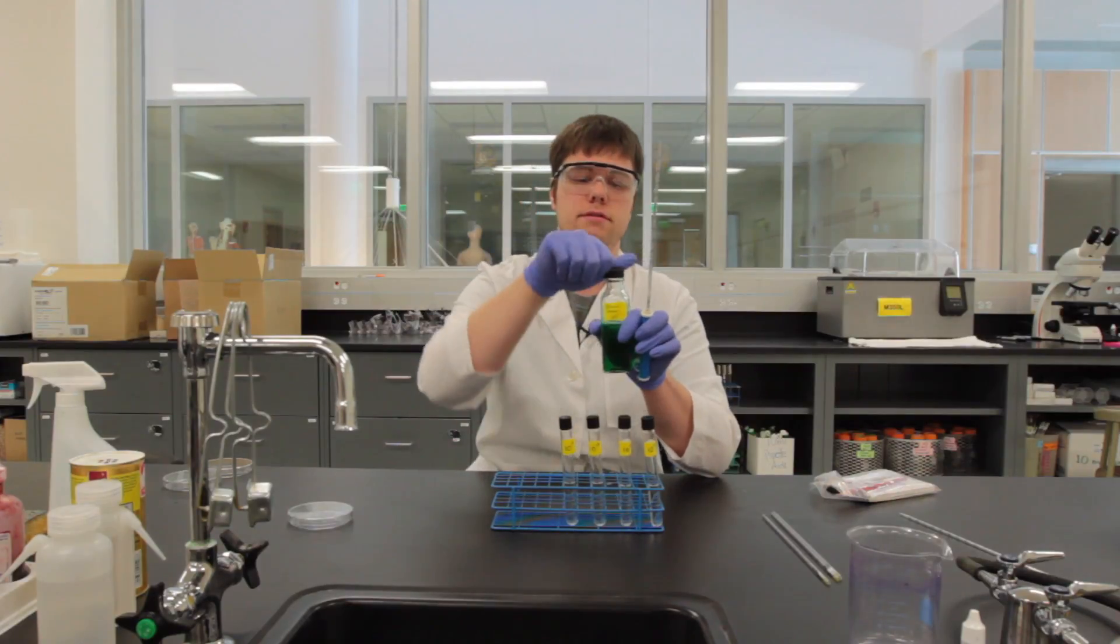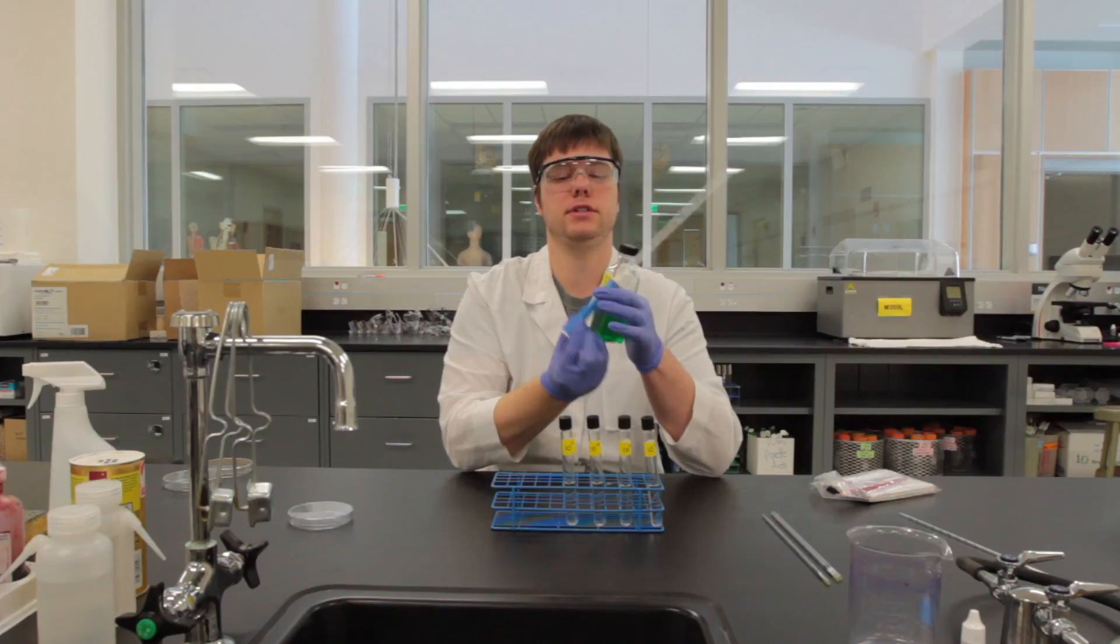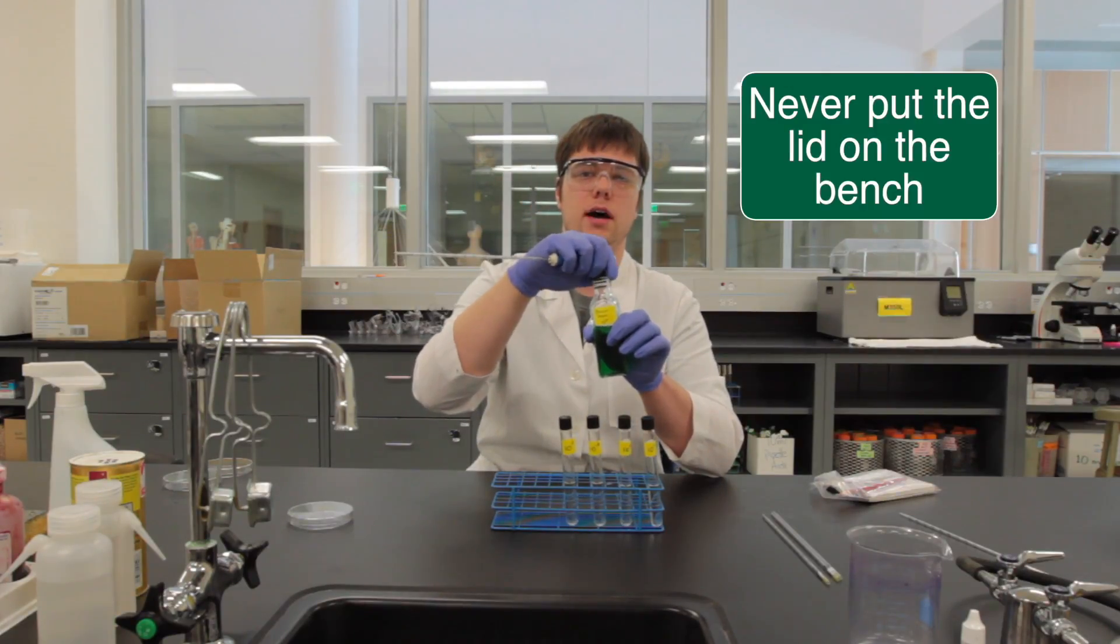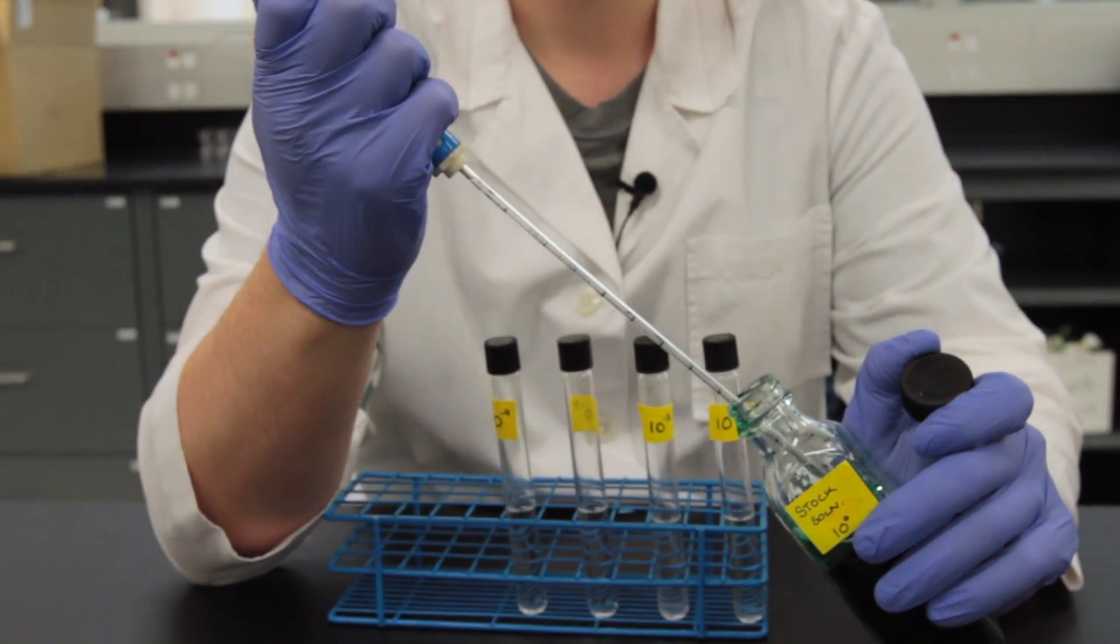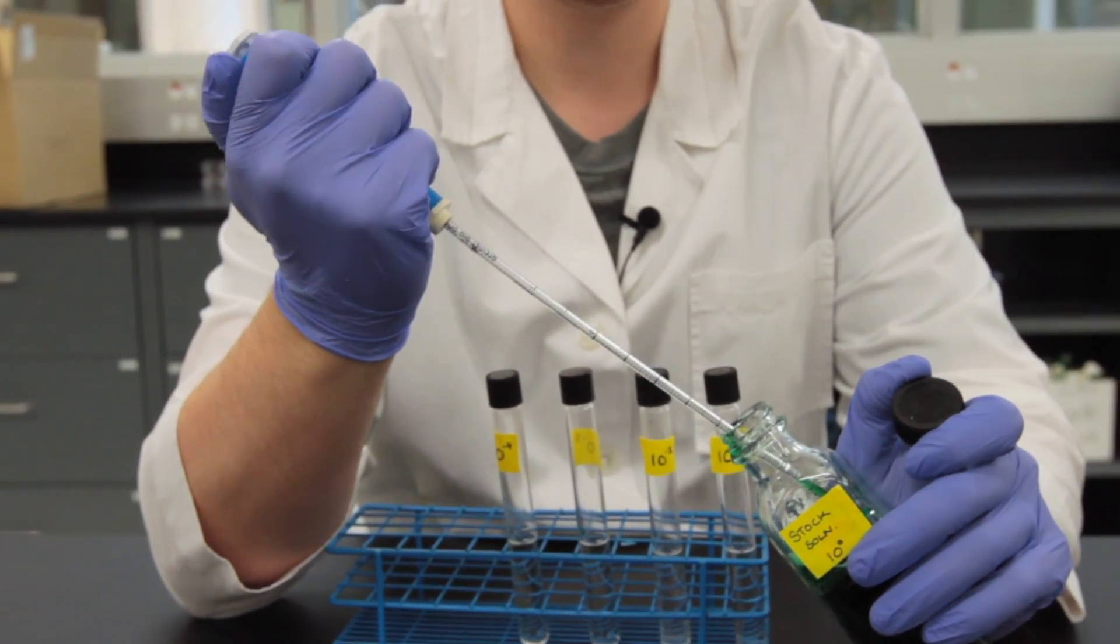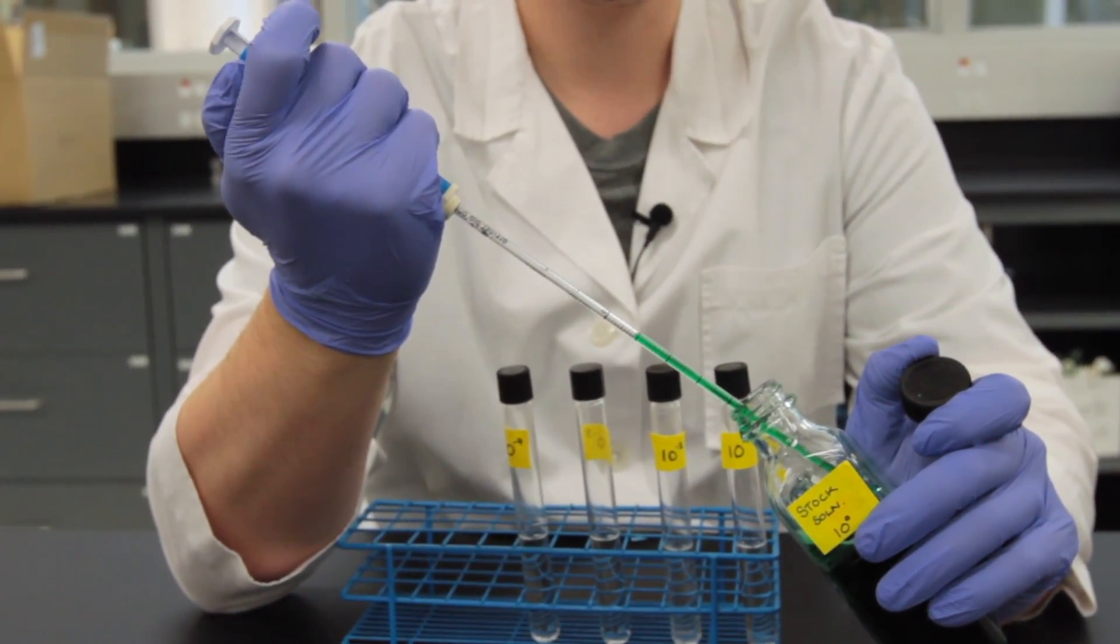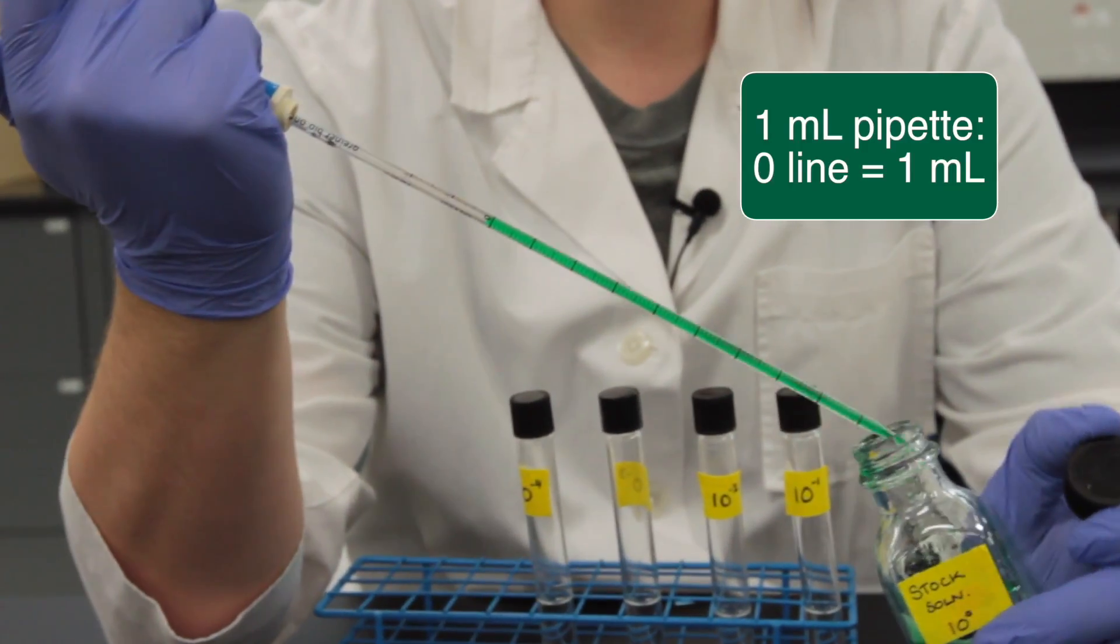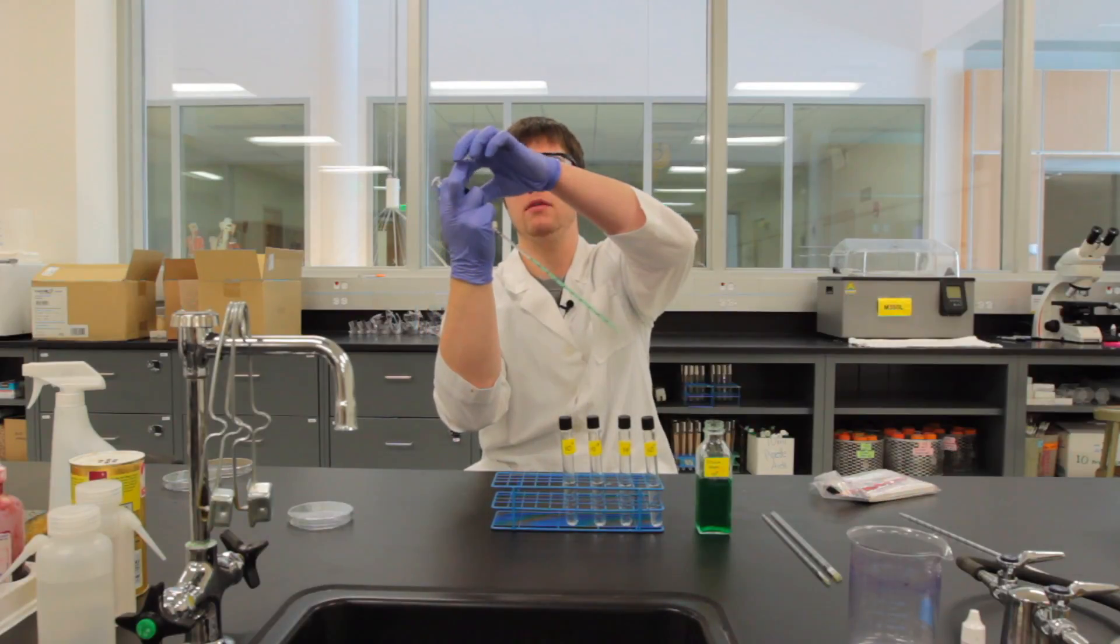We'll take the lid off and remembering our proper aseptic technique, we want to make sure that that lid doesn't touch the bench top. We then take our pipette and dip it into our liquid and we are going to be delivering one mil into our first test tube. So once again we draw up to that zero line, we'll set that stock vial on the bench top.